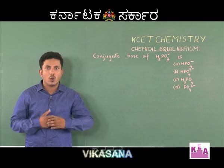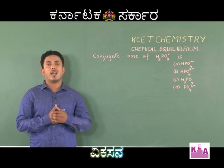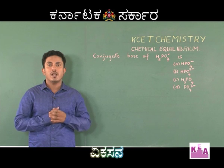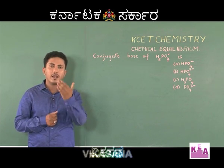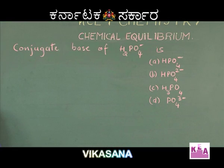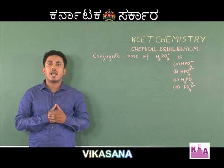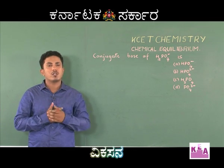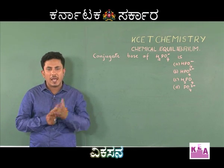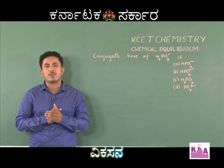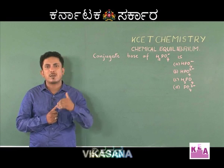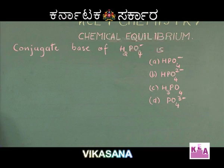Students, I will tell you what a conjugate acid-base pair is. I will discuss the concept of conjugate acid-base with the help of an example, and then I will tell you how to solve the problem. First, what is a Brønsted acid or base? According to the Brønsted-Lowry concept, an acid is a substance that donates a proton and a base is a substance that accepts a proton.